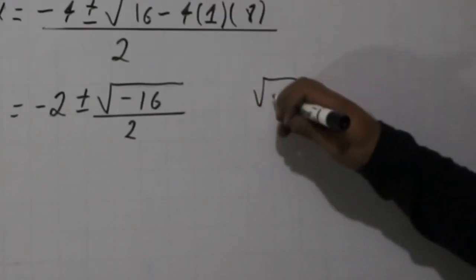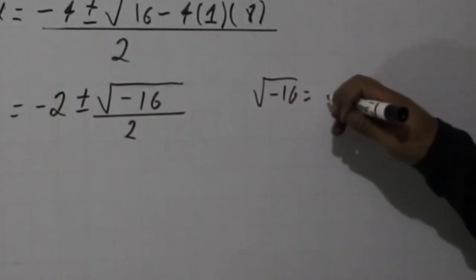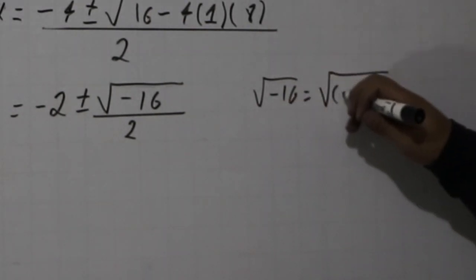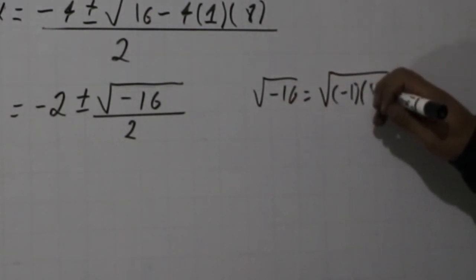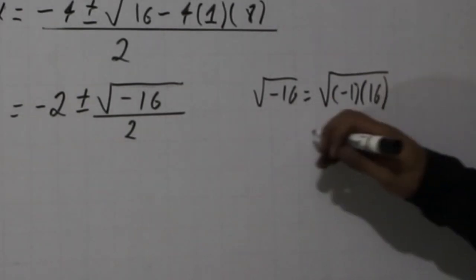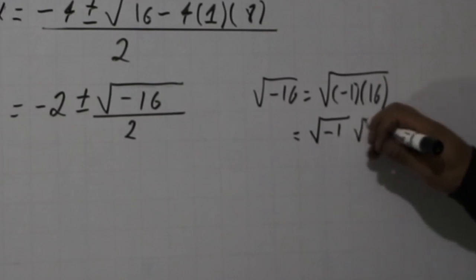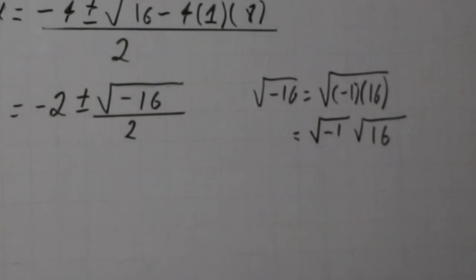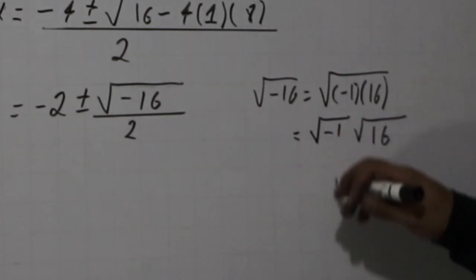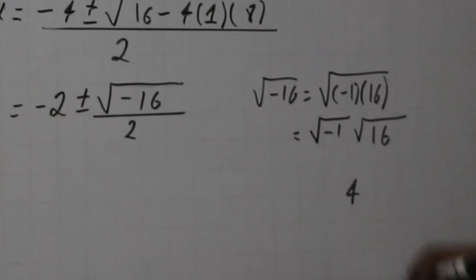Let's do this: square root of -16, that would be like the square root of -1 multiplied by 16. Now, using the properties of the square root, we have the square root of -1 multiplied by the square root of 16. Now, the square root of 16 is 4, and we have here the square root of -1, and that's the complex number i.